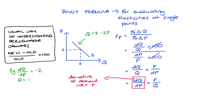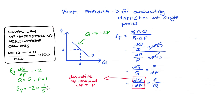Q is 5 and P is 1 at the point we're interested in, so the elasticity would be dQ/dP which is negative 2, times 1 (the price) over 5, giving us negative 2 over 5.